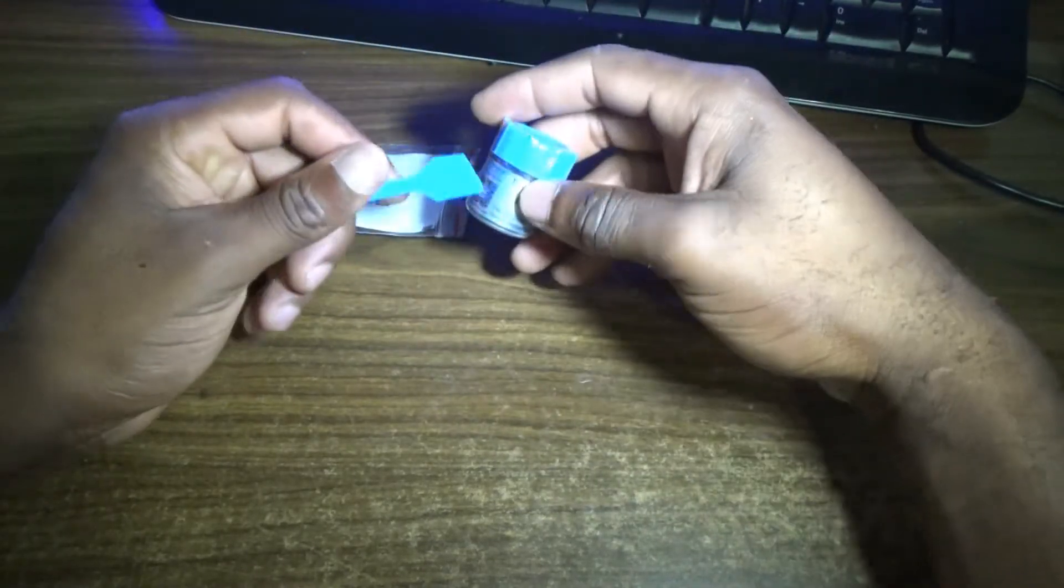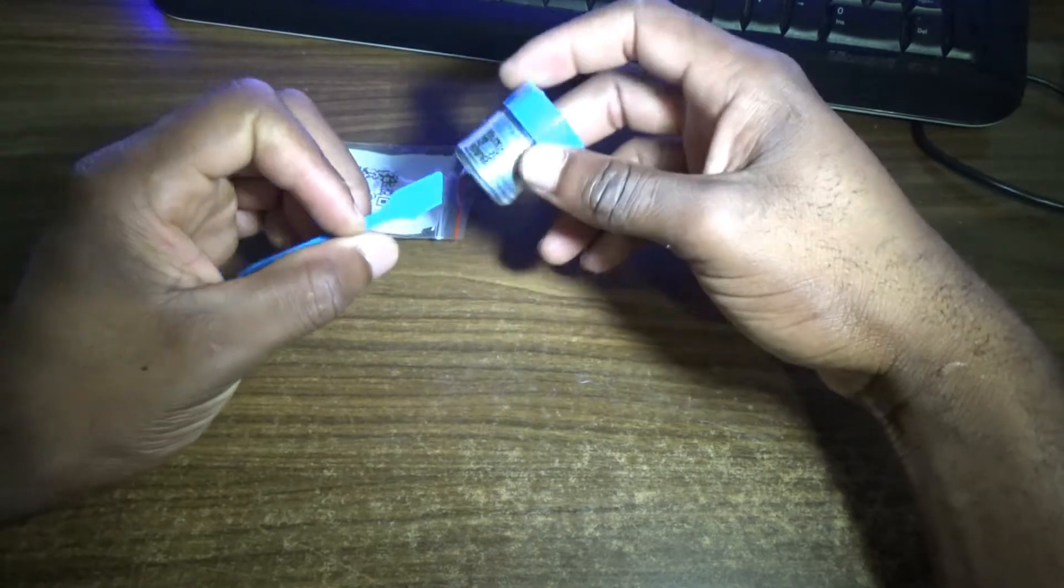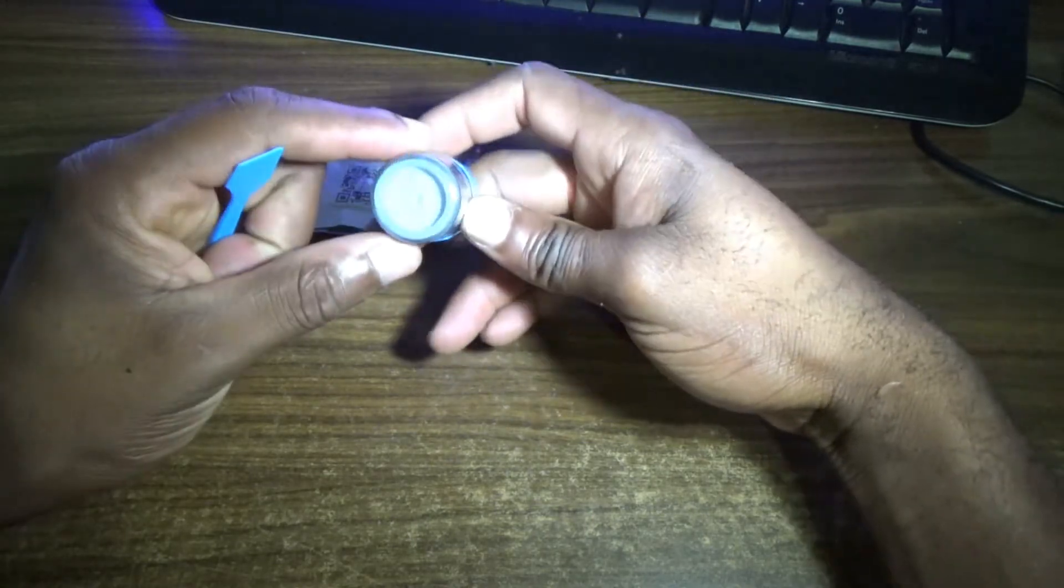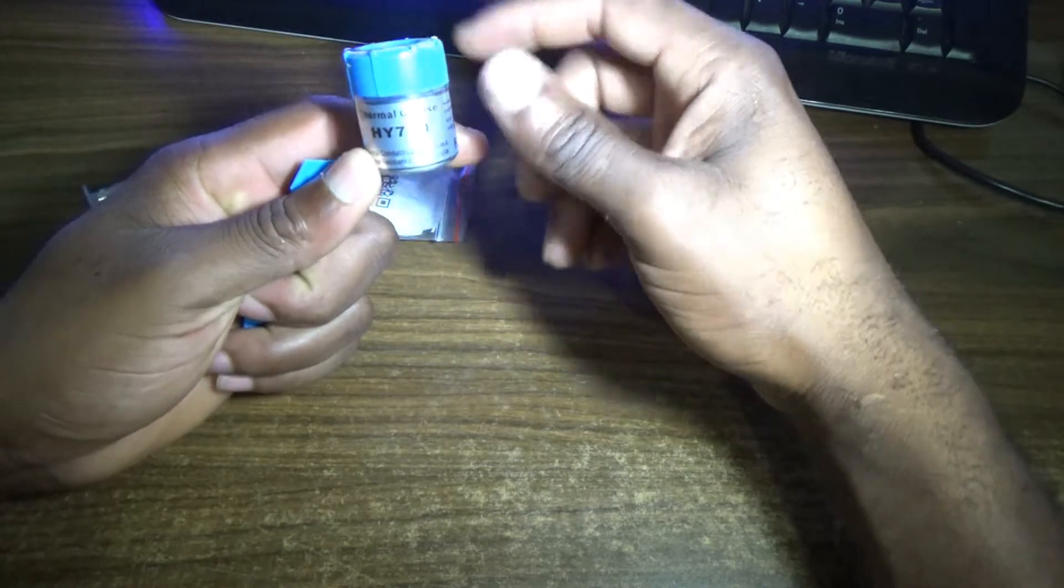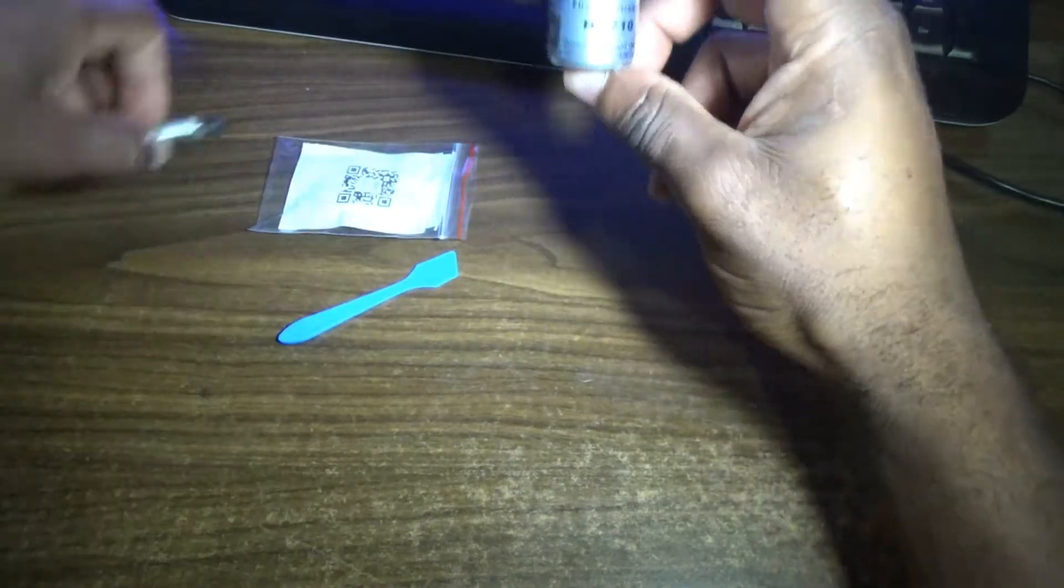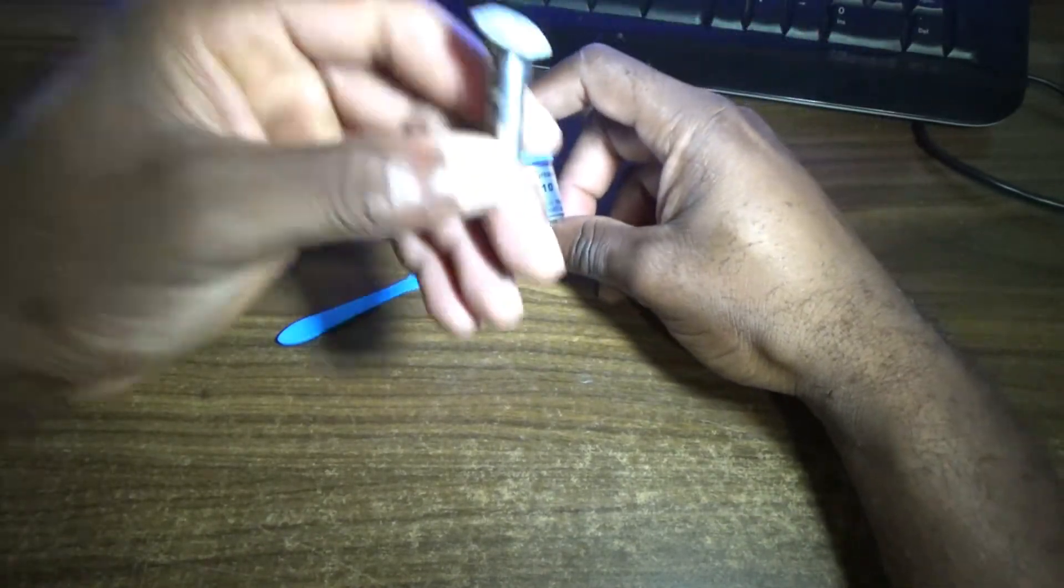thermal grease on your processor or heatsink. As you can see, it's well filled with thermal grease. This is a lot versus this small one. I paid nine dollars for this and only seven dollars for this, so much more.